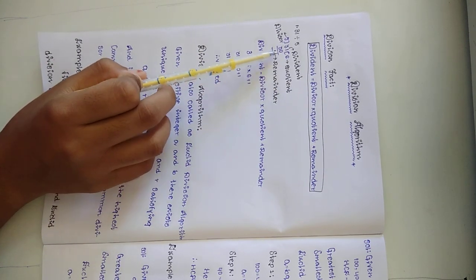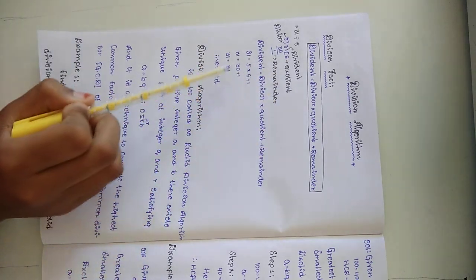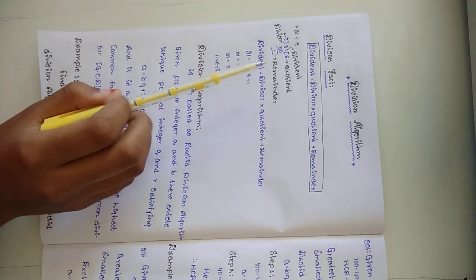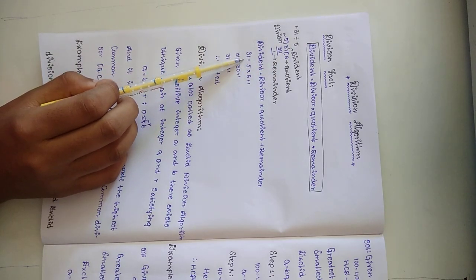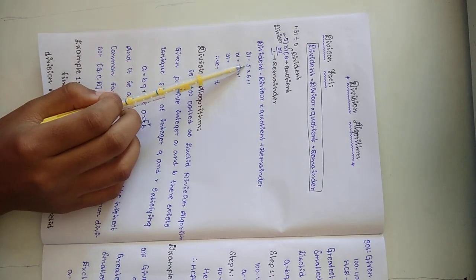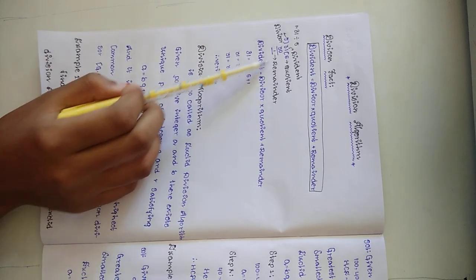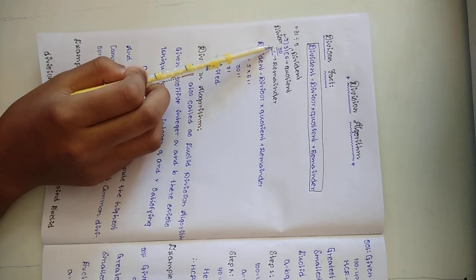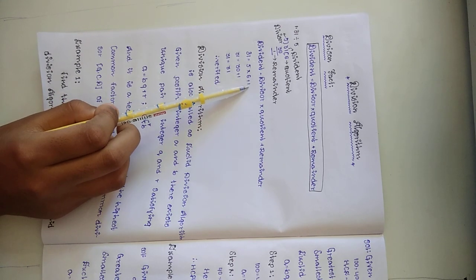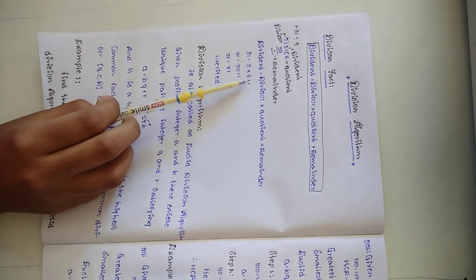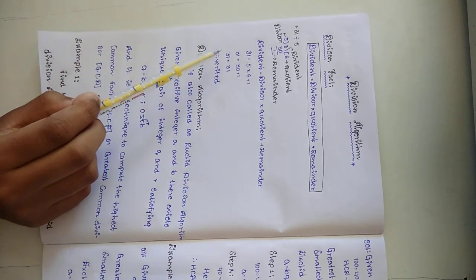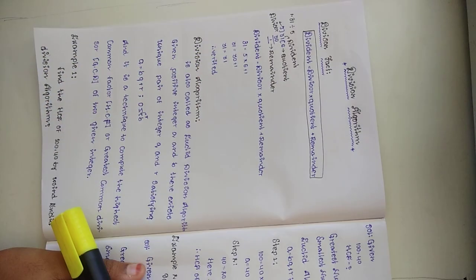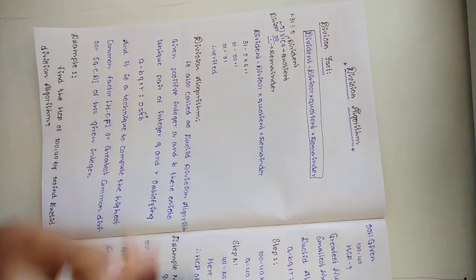Whether this answer is right or wrong, let us verify using the division fact: Dividend equals Divisor into Quotient plus Remainder. So 31 equals 5 into 6 plus 1, which gives 30 plus 1, equals 31. So verified.